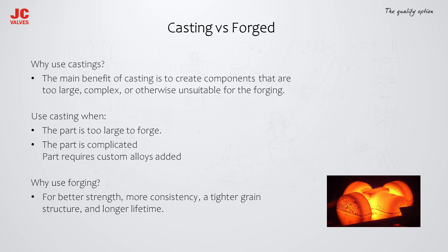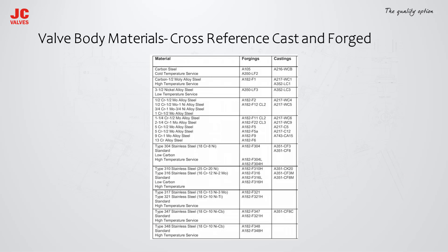Why use castings? The main benefit of casting is to create components that are too large, complex, or otherwise unsuitable for forging. Casting is used when the part is too large to forge, is complicated, or requires custom alloys. Why use forging? For better strength, more consistency, a tighter grain structure, and longer lifetime.